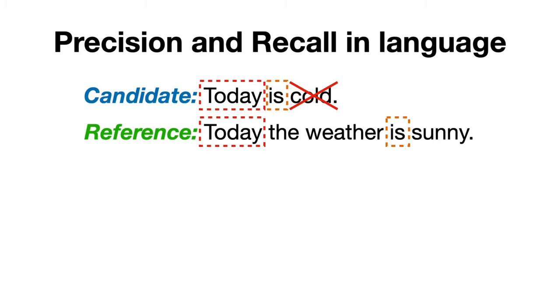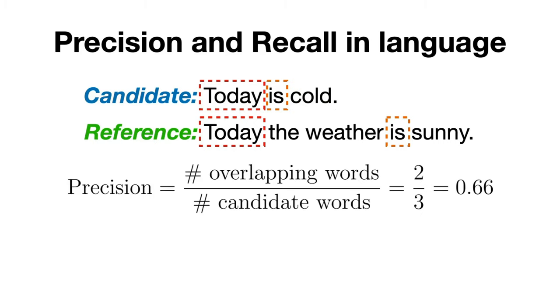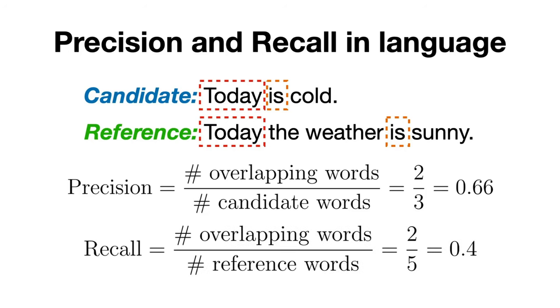So out of the three words predicted, two are correct. This means that our precision would be two-thirds or approximately 0.66. On the other hand, the recall would be two out of five since we correctly predicted two out of the five words present in the reference sentence, resulting in a recall of 0.4.